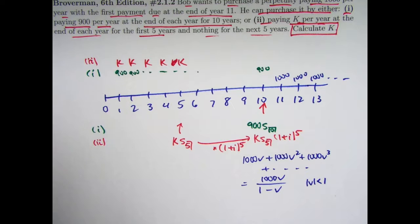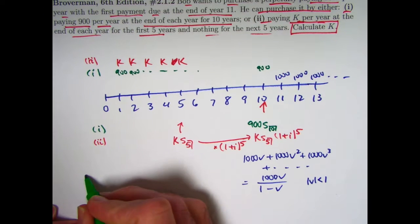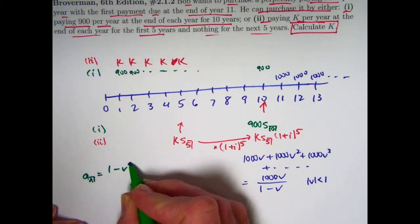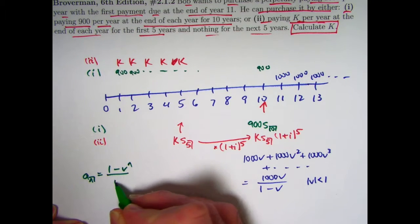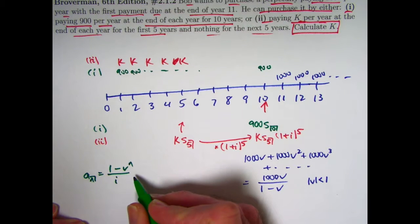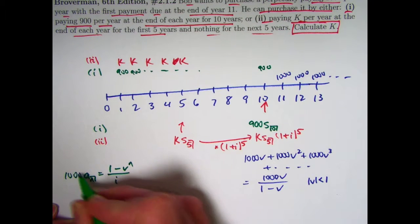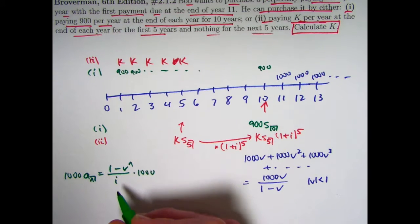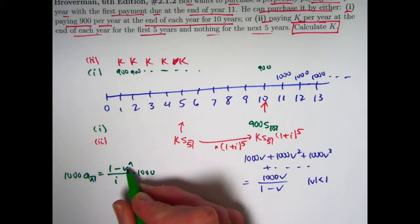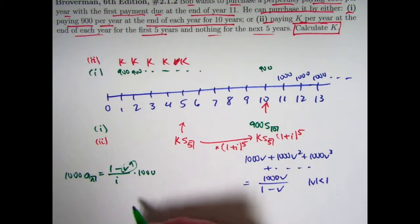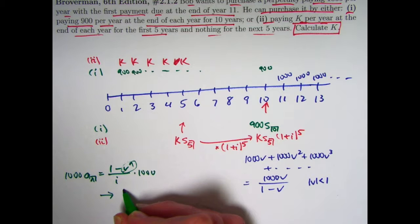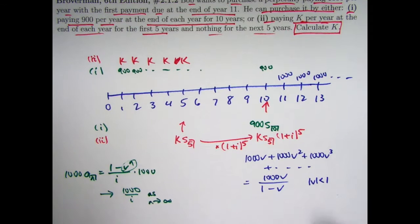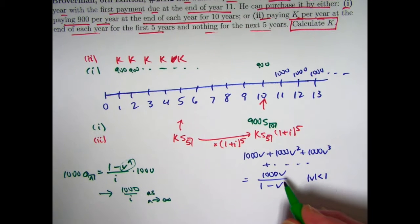This can also be thought of as the limiting value of a_n as n goes to infinity. Well, in this case, 1000 a_n. As n goes to infinity, v to the n, because v is between zero and one, will go to zero. This approaches 1000 over i as n goes to infinity.